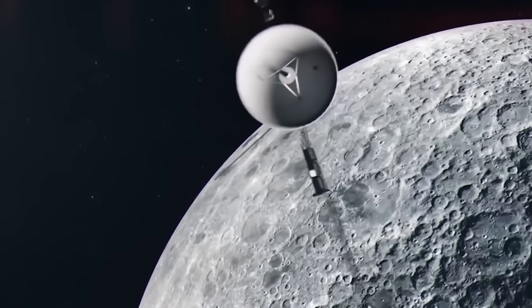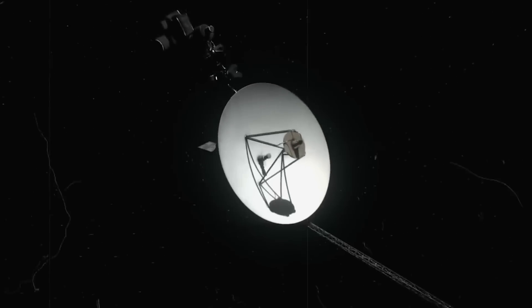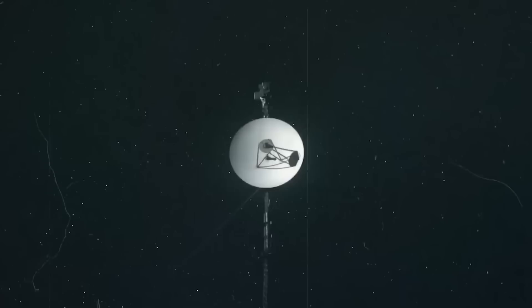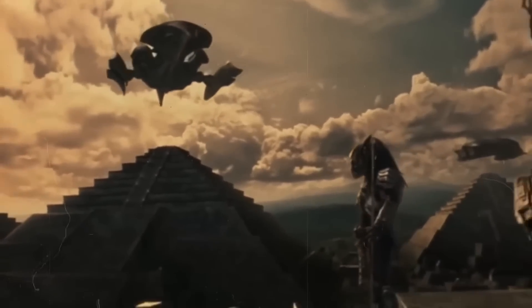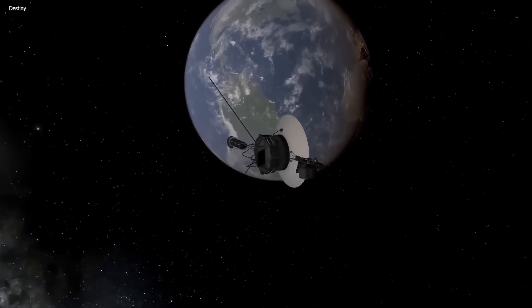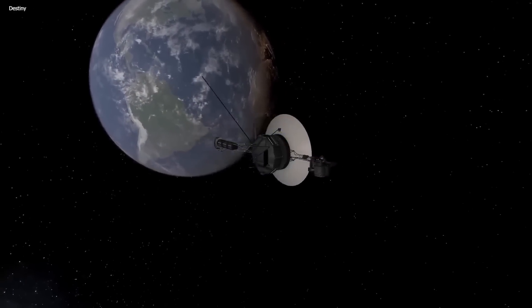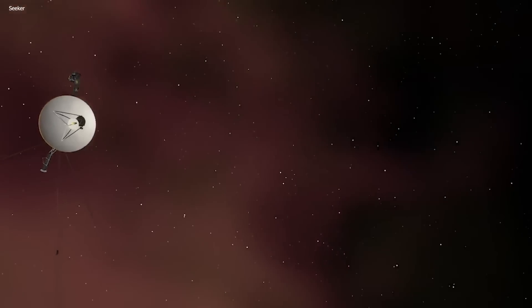Although Voyager 1's main objective was to complete the mission in a few years, it had other ideas and wanted to stay longer. It is now located in an area of space that we have never directly investigated, more than 14 billion miles from Earth.